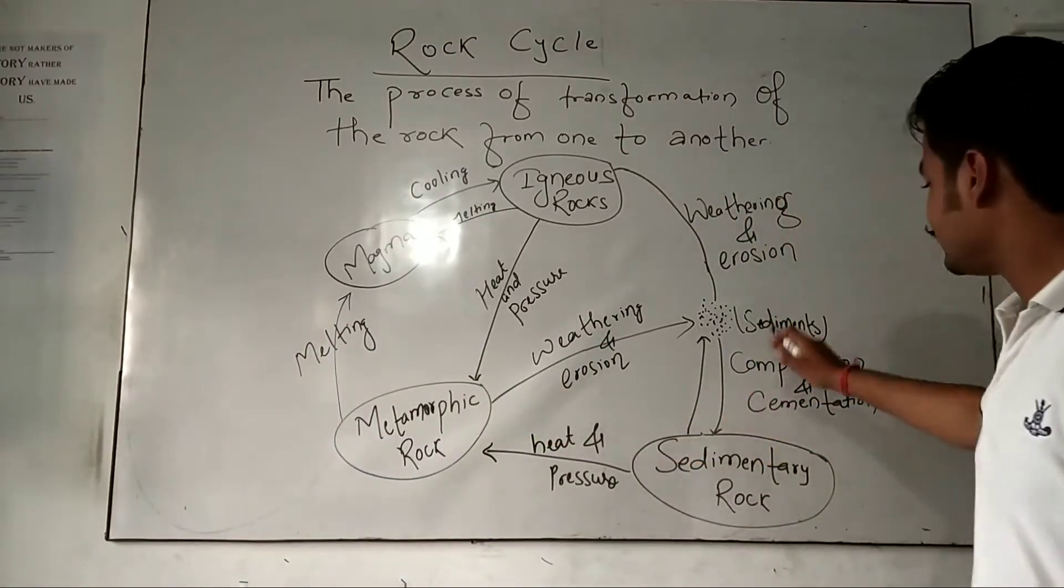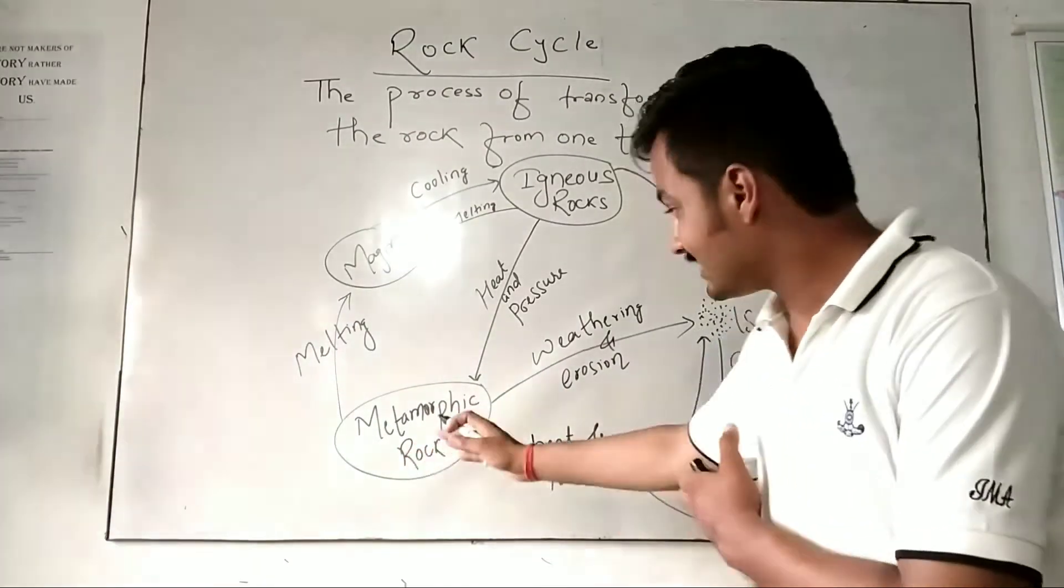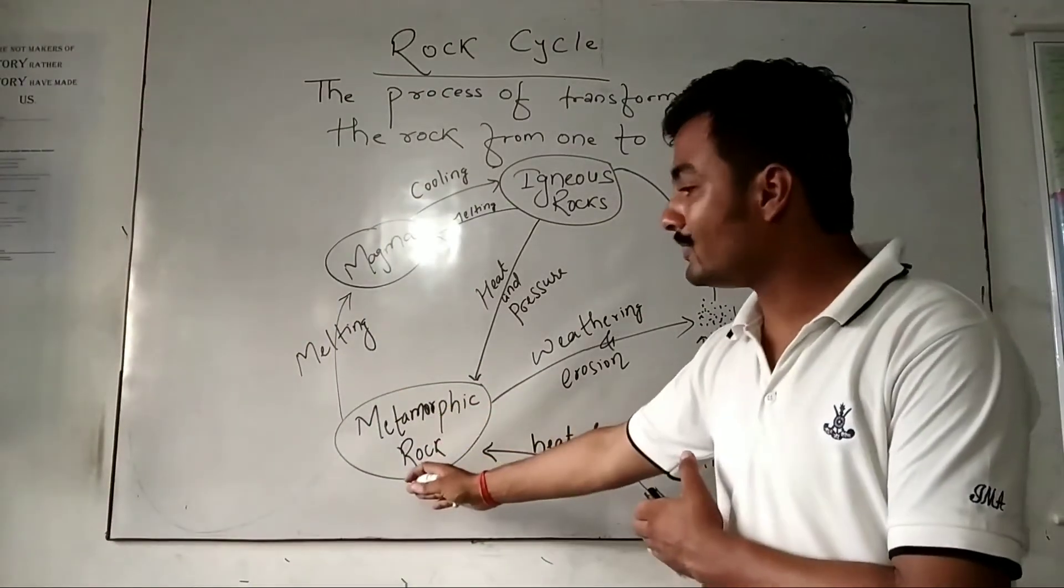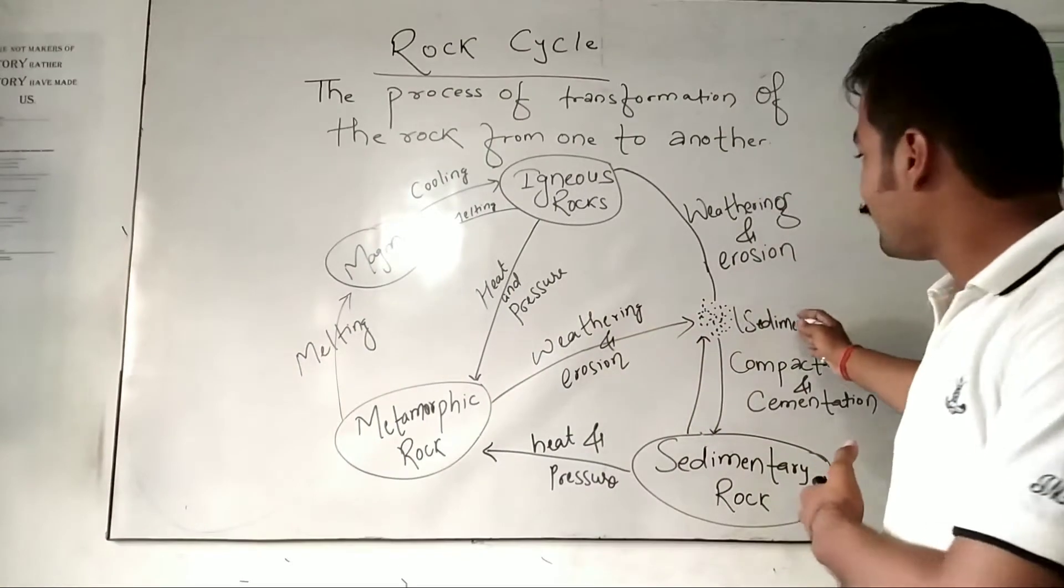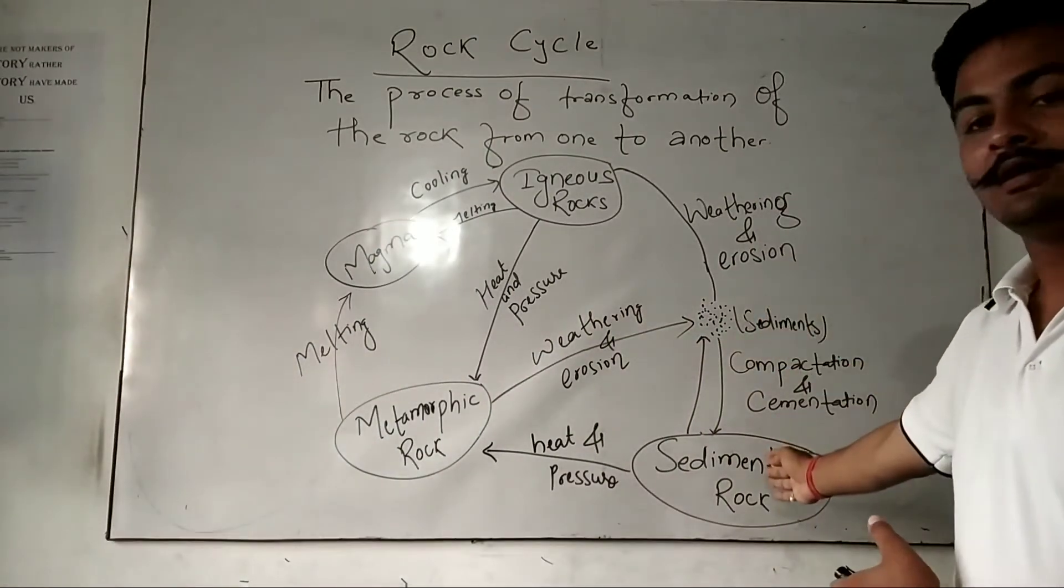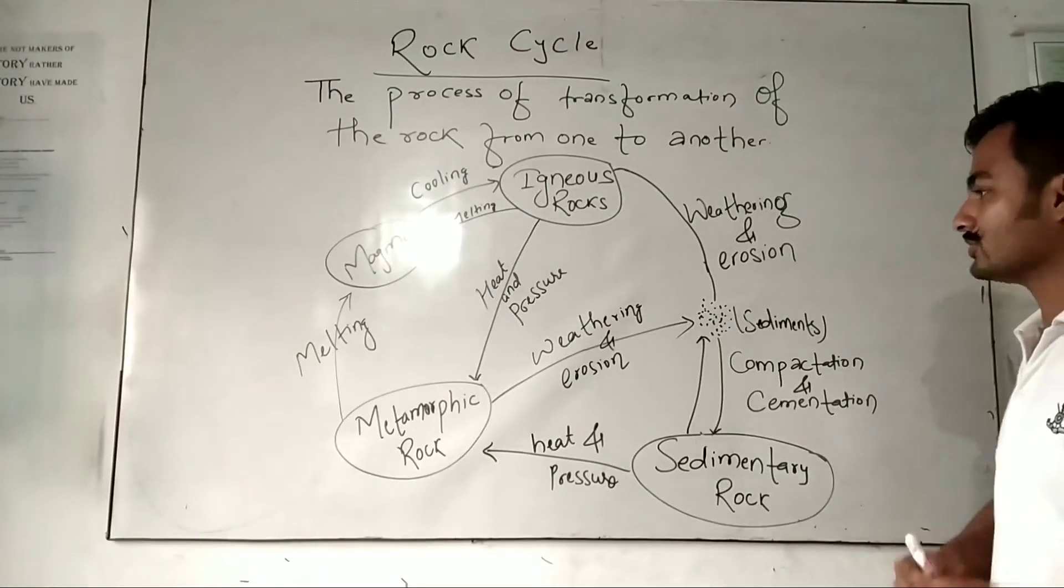There is a cycle from sediment to sedimentary rock. Sedimentary rock transforms into metamorphic rock due to extreme heat and pressure. And this metamorphic rock, if it breaks into sediments, once again converts into sediments and after cementation and compaction, forms into sedimentary rock.